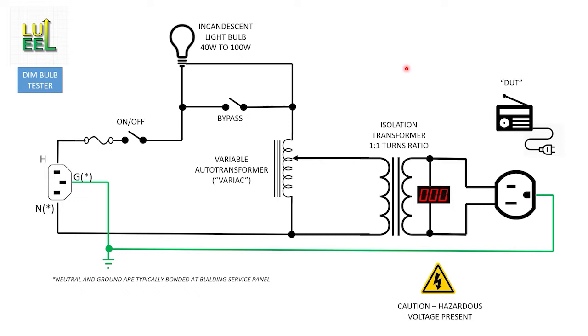Now keep in mind this method doesn't limit current exactly the same way as a current limited power supply would. The reason is because of the voltage drop across the bulb and that means your DUT won't ever see full mains AC when the bulb is in series with it. And that's why I have this bypass switch here. It allows bypassing the bulb after the DUT has shown me it didn't malfunction. Closing this bypass will apply full mains voltage to the Variac.